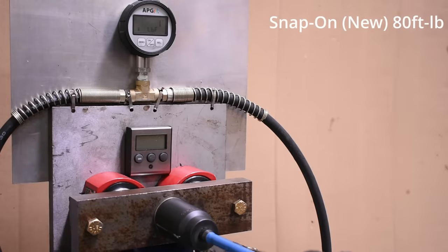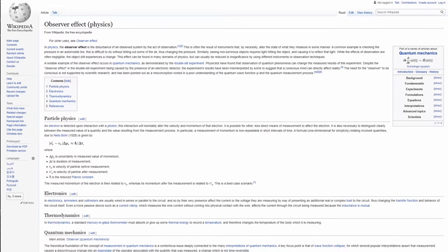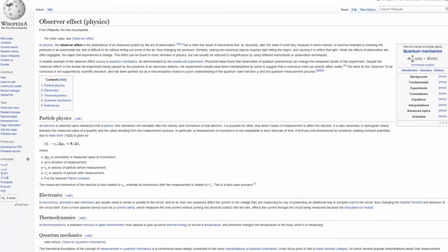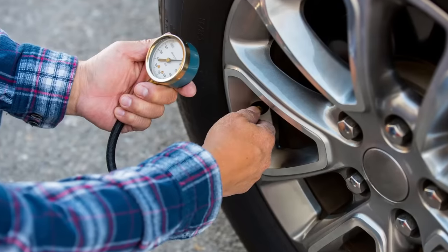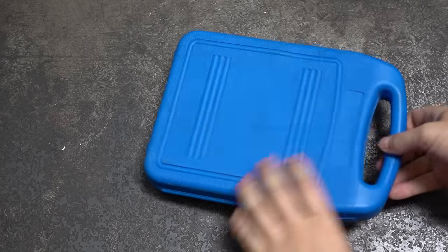What we have here is a classic case of the physics phenomenon the observer's effect. Essentially the act of trying to measure something changes that outcome, like checking your car's tire pressure which will inherently let out some pressure, and we'll show you how in our case coming up.